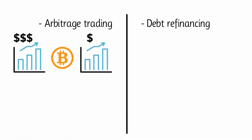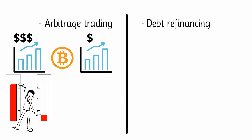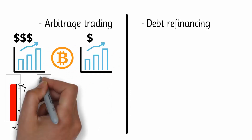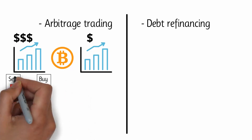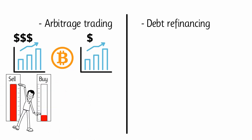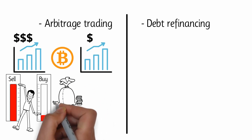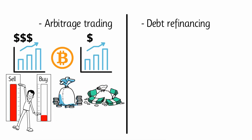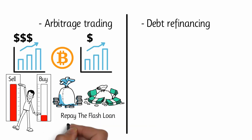For example, the trader in question would buy a cryptocurrency at a lower price on one exchange and sell it for a higher price on another exchange. This leaves the trader with his loaned assets and the bonus gained from arbitrage trading. Once done, the user can repay the flash loan and enjoy the newly gained profits.